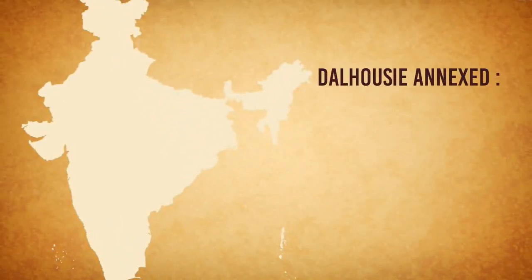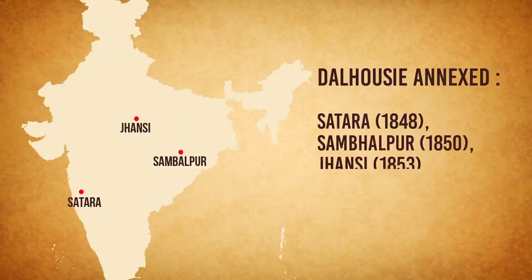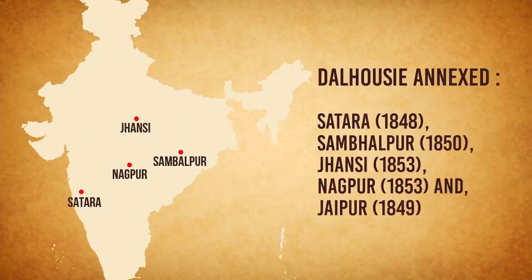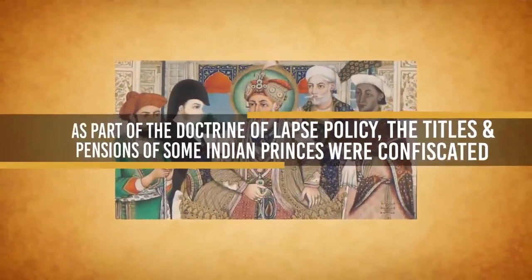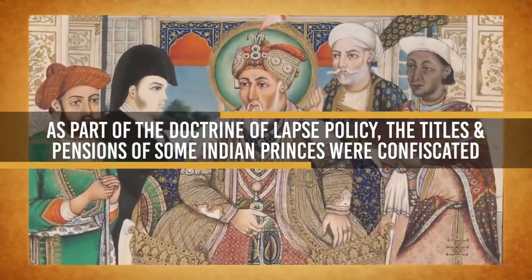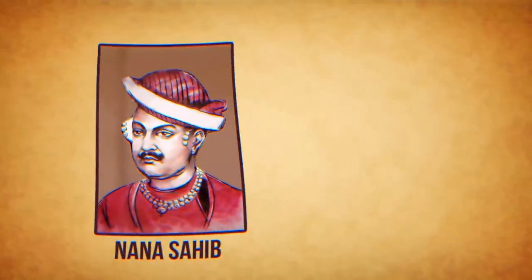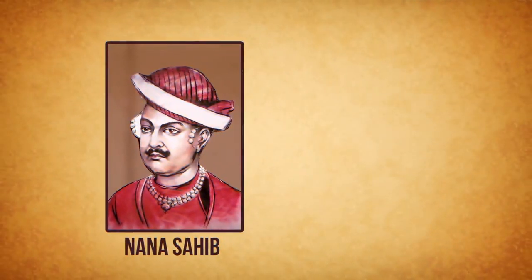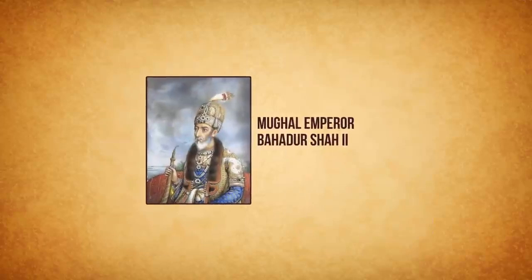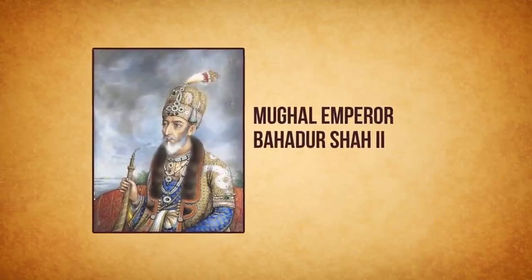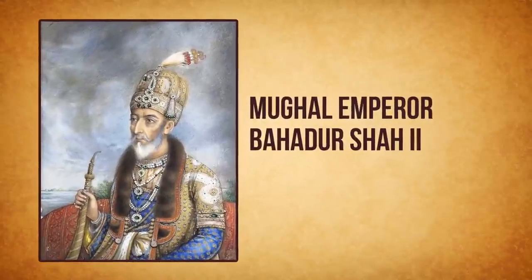In the course of eight years, Dalhousie annexed Satara, Sambalpur, Jhansi, Nagpur, and Jaipur. This policy enraged the Indian rulers against the British government. As part of the Doctrine of Lapse policy, the titles and pensions of some Indian princes were confiscated. The pension of Bajirao's son Nana Sahib was discontinued after his father's death, and the Rani of Jhansi was deprived of her right to rule in violation of recognized Hindu law. Dalhousie further proposed to abolish the title of the Mughal Emperor after the death of Bahadur Shah II.